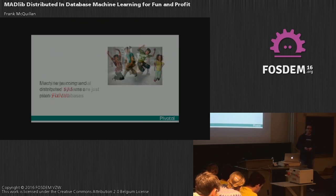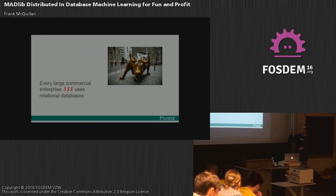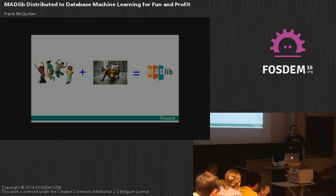But you still have to earn a living. Fact number two is that if you look at every large commercial enterprise out there, they're using relational databases — data arranged in relational form in some way, shape, or form. That is the Wall Street Bull. So if you put those two together, this is the equation you end up with: fun plus money equals Madlib. That's the area I'd like to talk about today.